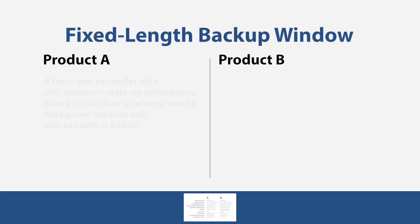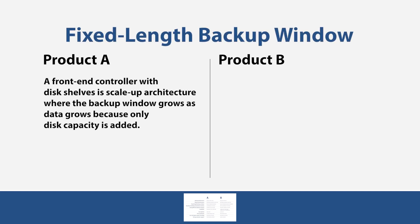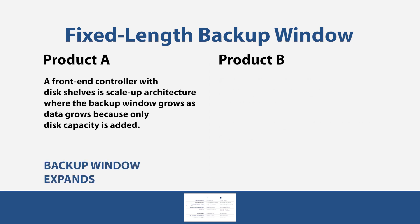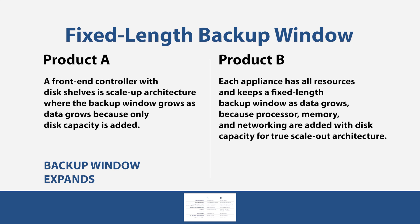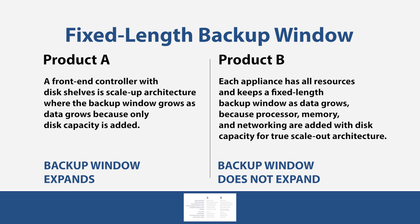Fixed-length backup window: Product A uses a front-end controller with disk shelves in a scale-up architecture, where the backup window grows as data grows because only disk capacity is added — the backup window expands. Product B, each appliance has all resources and keeps a fixed-length backup window as data grows, because processor, memory, and networking are added with disk capacity for true scale-out architecture — the backup window does not expand.